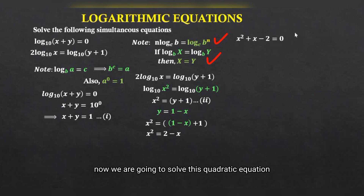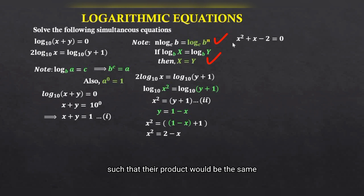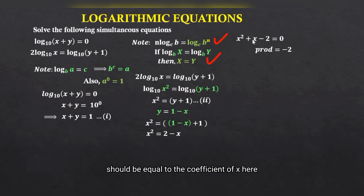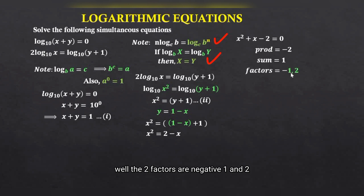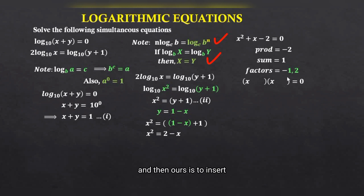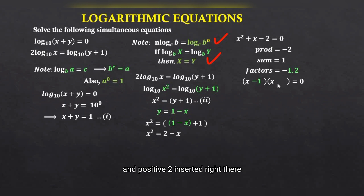We solve this quadratic equation by factorization. We look for two factors whose product equals the product of the coefficient of x squared and the constant term: 1 times negative 2, which is negative 2. Their sum must equal the coefficient of x, which is 1. The two factors are negative 1 and 2. We factorize the left-hand side as two brackets, each beginning with x, inserting negative 1 and positive 2 respectively.